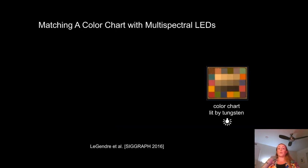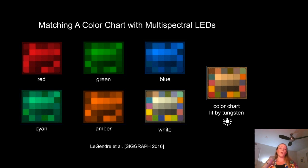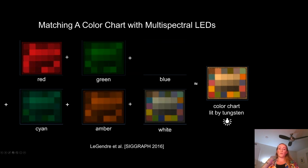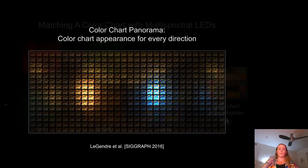In our approach, we directly solve for how to drive the multi-spectral LEDs of our light stage to match a given color chart's appearance. Take a color chart lit by a particular target illuminant, say tungsten. We first photograph the chart lit by the red, green, blue, cyan, amber, and white LEDs inside our light stage. Any color chart illuminated by a light source in the light stage must be a linear combination of these six images because light is additive. We then solve for the amount of each image to add together to produce the appearance of the chart lit by tungsten — corresponding to the intensities used to drive each LED. This technique doesn't require any spectral measurements; it's the same process as metameric reflectance matching from Wenger et al. 2003, but with no spectroradiometer required.